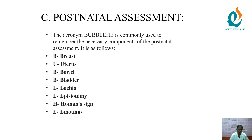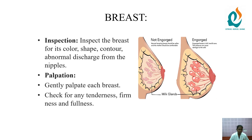In postnatal assessment, we follow the BUBBLE HE technique, which is commonly used to remember the necessary components. B stands for Breast, U for Uterus, B for Bowel, B for Bladder, L for Lochia, E for Episiotomy, H for Homan's sign, and E for Emotion.